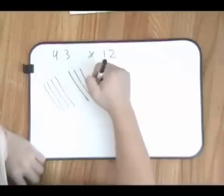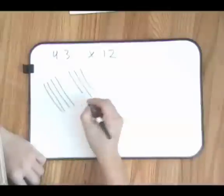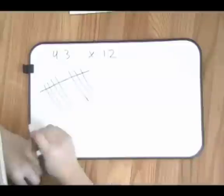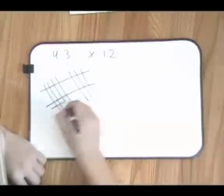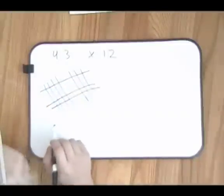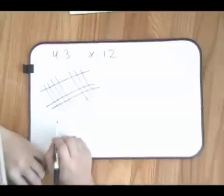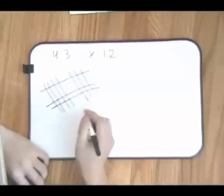And then the 12: 1 line and 2. Now you group off each of the areas like so.